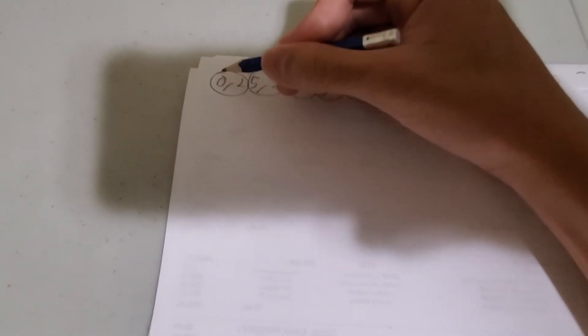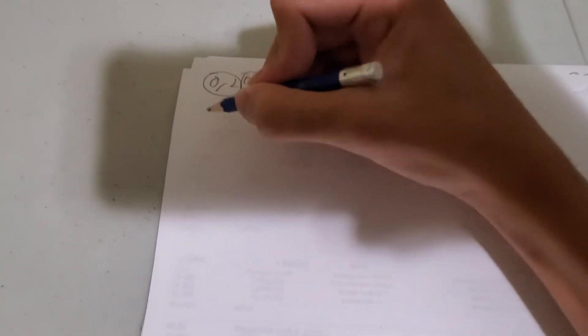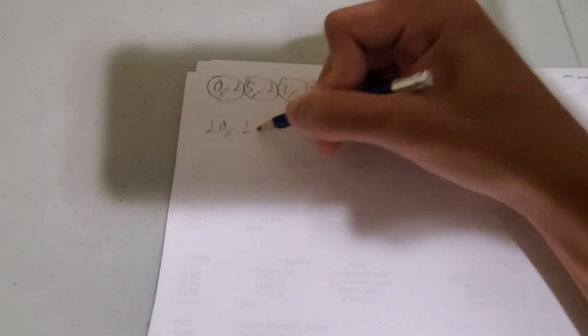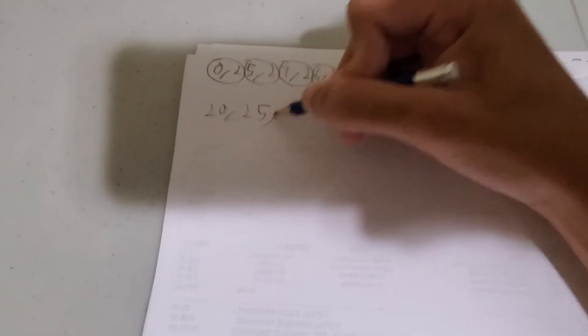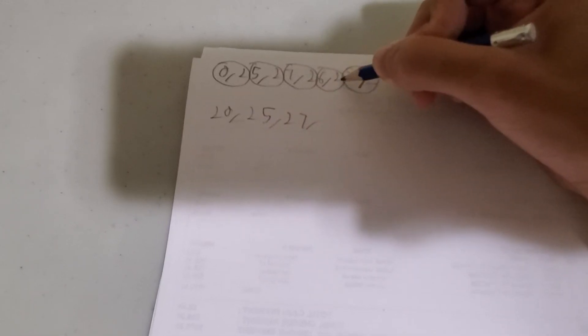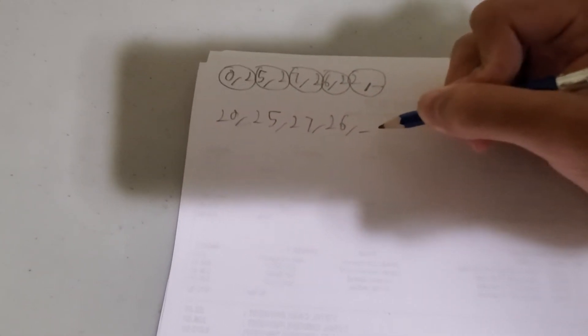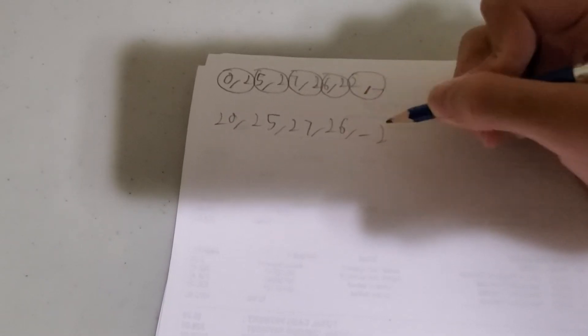So let's write them backwards in a single number. So 20, and then let's write 25, and then 27, and it's 26, and then something 2, because backwards something 2.